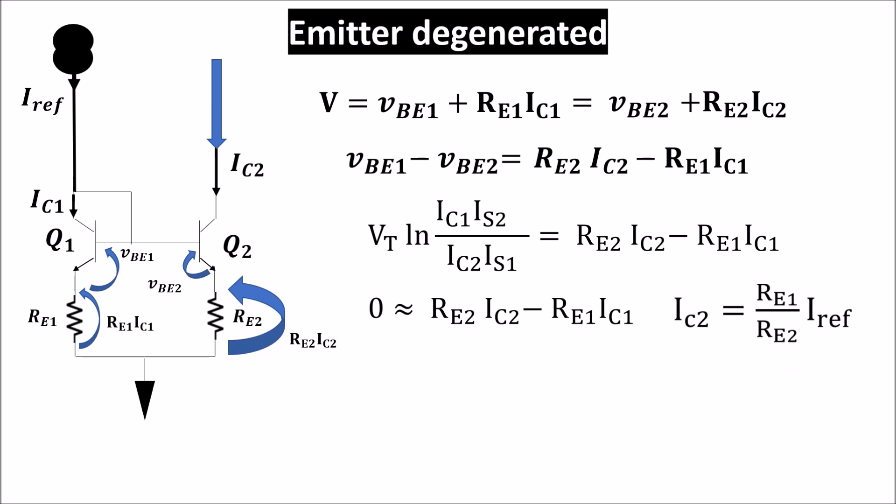So we can write this relation in which we consider I_C1 equal to I_ref, neglecting the base current. This relation tells us that we can control the mirrored current by controlling the emitter resistor, and as we saw, in this way we have a more stable output current.